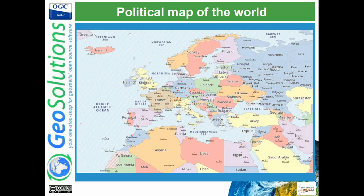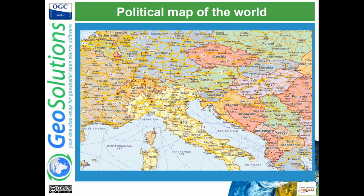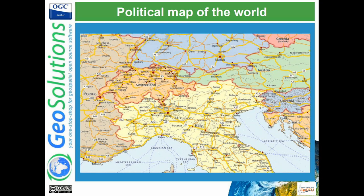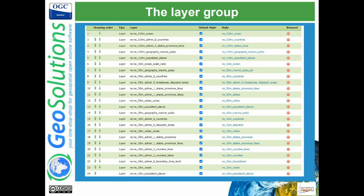You can probably see they are reminiscent of an old printed political map. This is the highest zoom level with all the roads and so on. It's a large layer group with all the datasets starting from the 110 millions, then the 50 millions, and then the 10 millions.